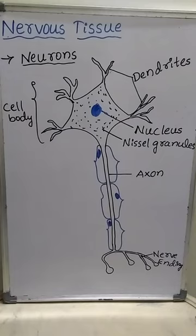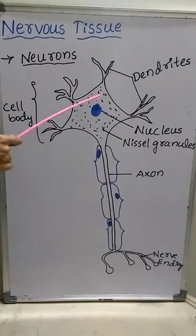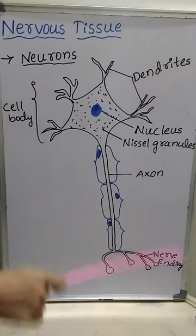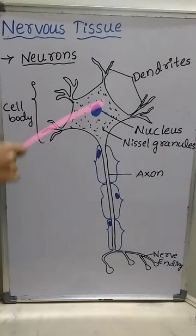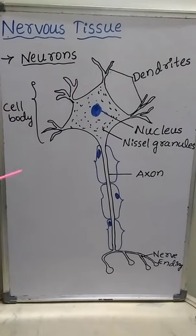Because of the absence of centriole, neurons cannot divide. If a particular neuron is damaged, the number of neurons in the body will be reduced by one, because neurons cannot undergo division due to the absence of centriole.